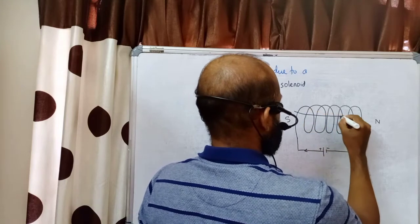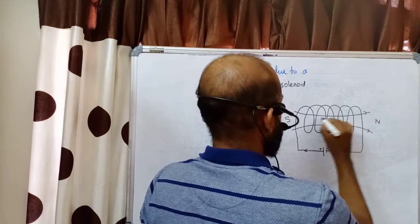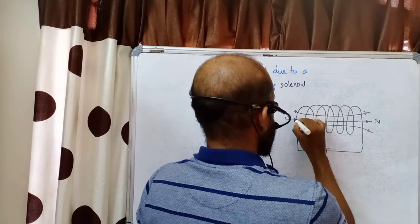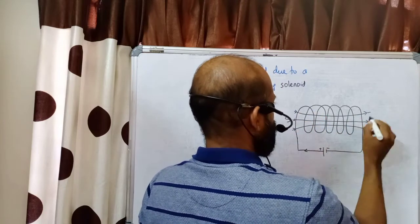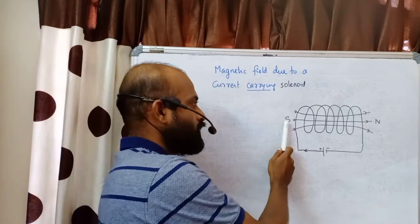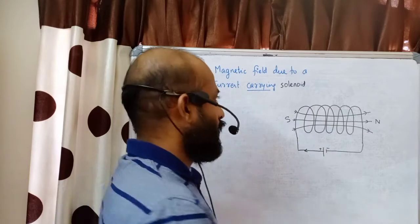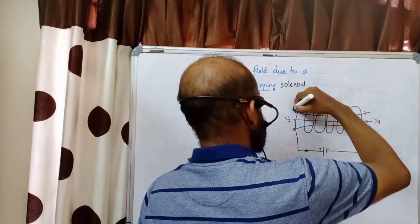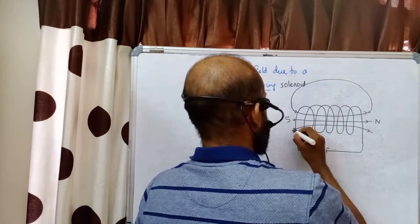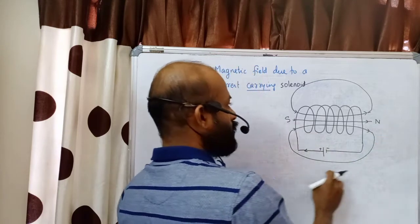Externally, the magnetic field goes from north to south. Internally, the direction of the magnetic field is from south to north. Inside the solenoid, the magnetic field lines are uniform and parallel. Outside, the field lines bend from north to south.